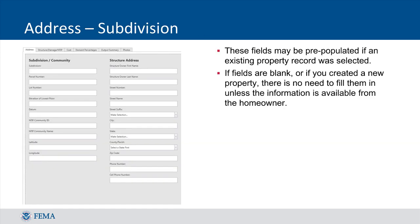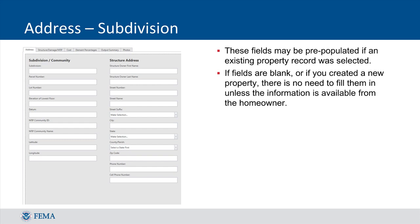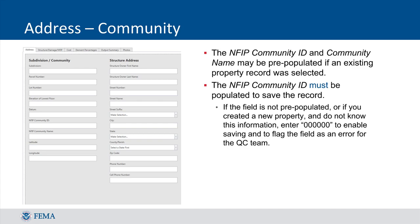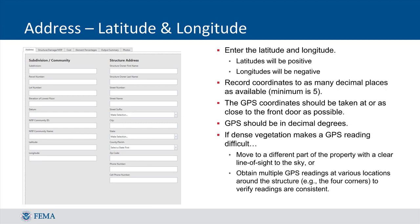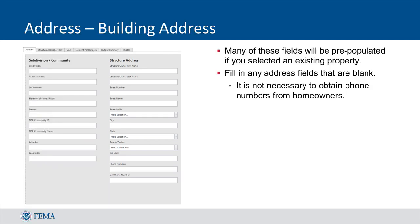Within the Address tab, only certain fields are required for a valid assessment. The first five data fields in the top left corner are not required, although a community may want the information populated if it is available. The NFIP Community ID and Community Name are required. If you do not know this information while performing the assessment in the field, it is recommended that a dummy value or placeholder be used to flag the field. You should record latitude and longitude to a minimum of five decimal places, and it is recommended that the coordinates be captured as close as possible to the front door of the structure. If property records were imported, then many of the fields in the Structure Address column will be populated. If not, you should populate the column with whatever data can be collected in the field.